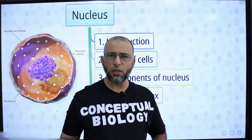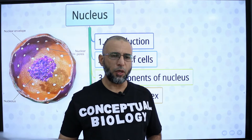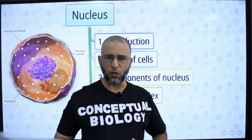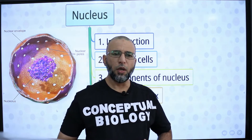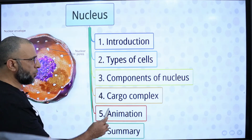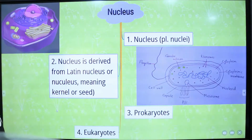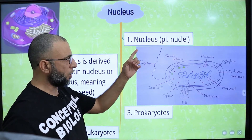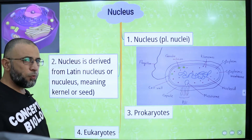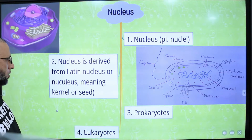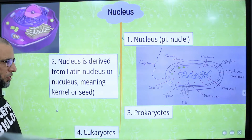Cell nucleus is an organelle that is bounded by double membrane. Nucleus is present in eukaryotic cells and nucleus contains majority of the cell's genetic material. Nucleus is singular; nuclei is plural. The term nucleus is derived from a Latin word that means kernel or seed.